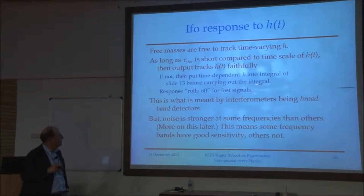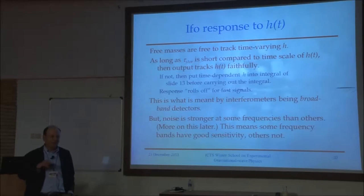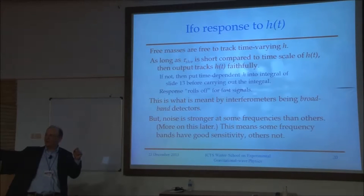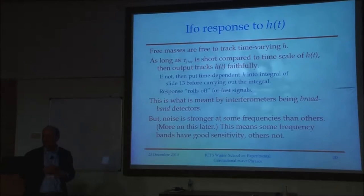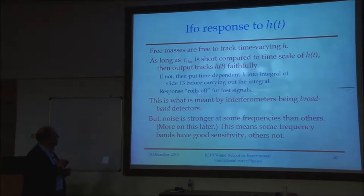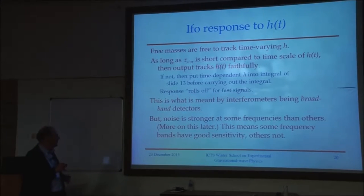When we talk about Fabry-Perot cavities later this week, I'll mention a small mathematical miracle: if we do beam folding the way Michelson and Morley did with a discrete number of bounces, there are some gravitational wave frequencies for which you get zero response — where the arm lengthens in half a period and shrinks in the other half. When we use Fabry-Perot cavities, there are no such nulls, only a smooth roll-off. So it's not that we always track H(t) faithfully, but we can always calculate the filter function and, assuming enough signal-to-noise, correct for it.